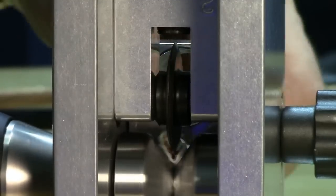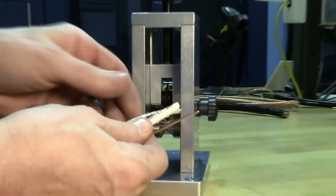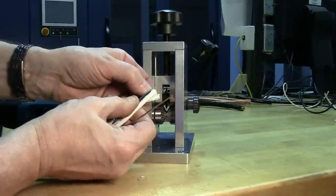See how the Stripmeister cuts through and cleans copper wire or aluminum wire of all sizes.